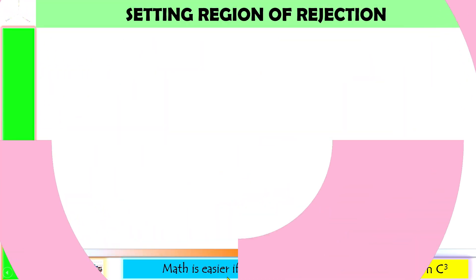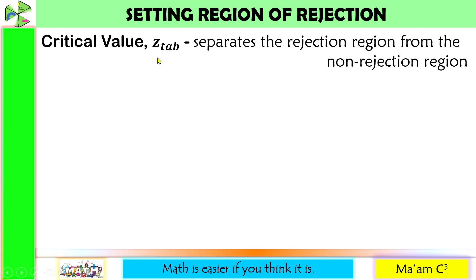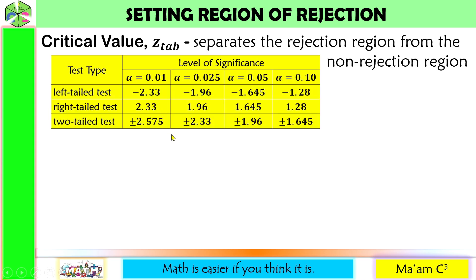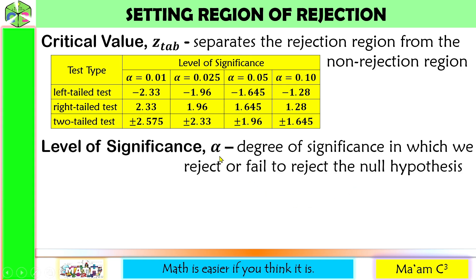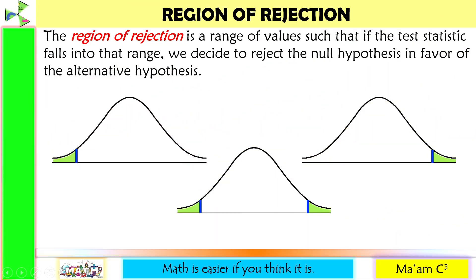How do we set up the region of rejection? We have to consider two things. One is the critical value, denoted by Z-tab — the values come from the Z table. The critical value separates the region of rejection from the non-rejection region. Another thing to consider is the level of significance, denoted by alpha — it is the degree of significance in which we reject or fail to reject the null hypothesis. These are the common values of statistical significance. The region of rejection is a range of values such that if the test statistic falls into that range, we decide to reject the null hypothesis in favor of the alternative hypothesis.